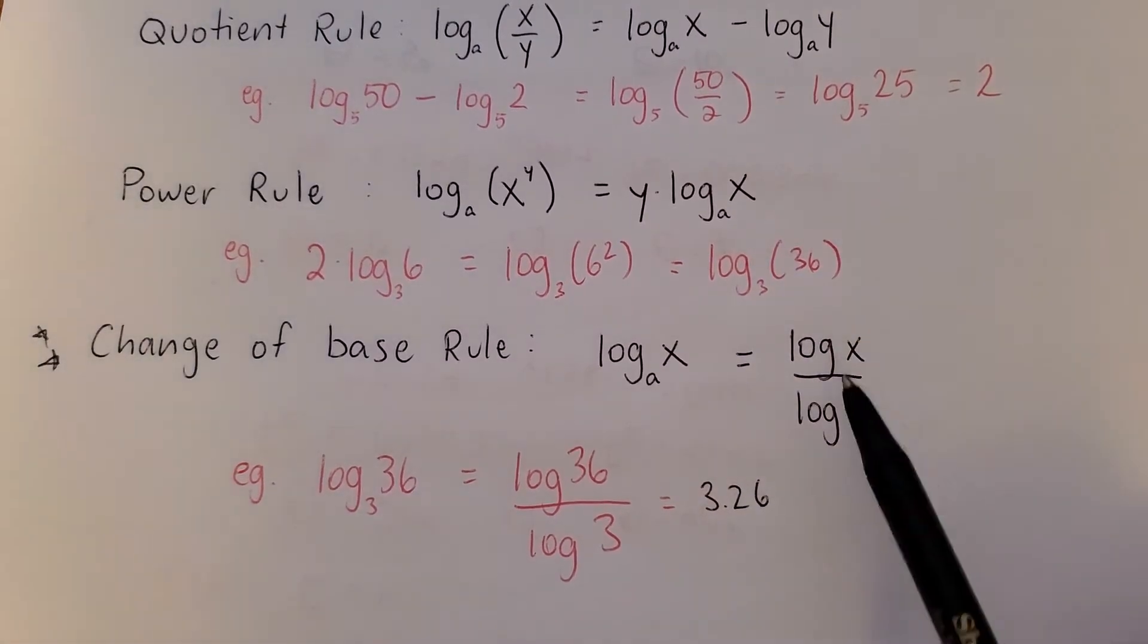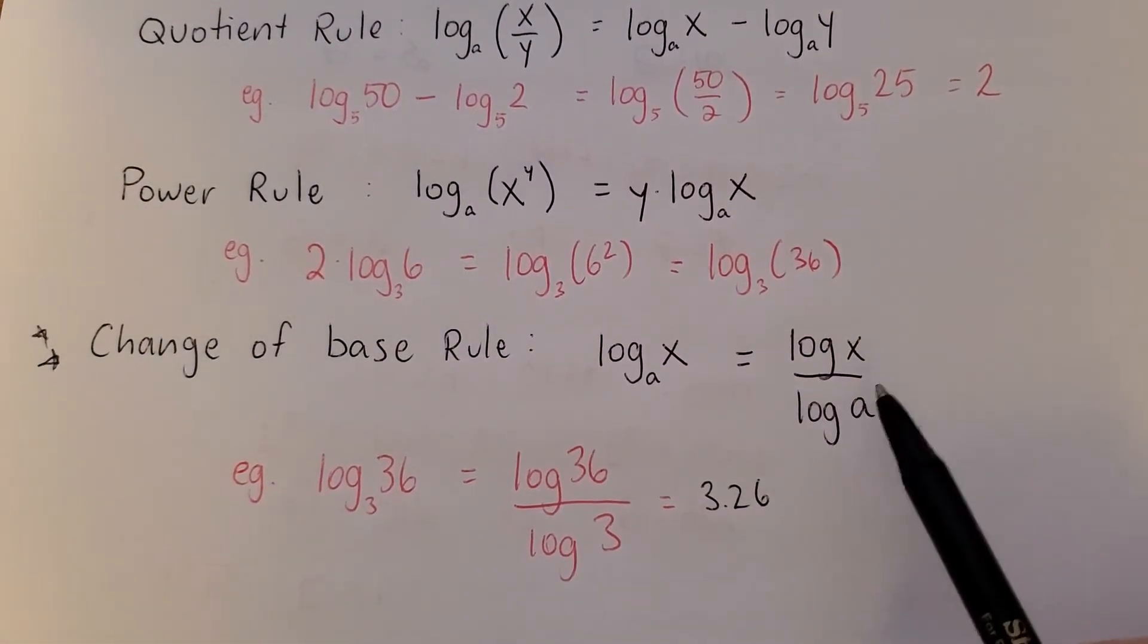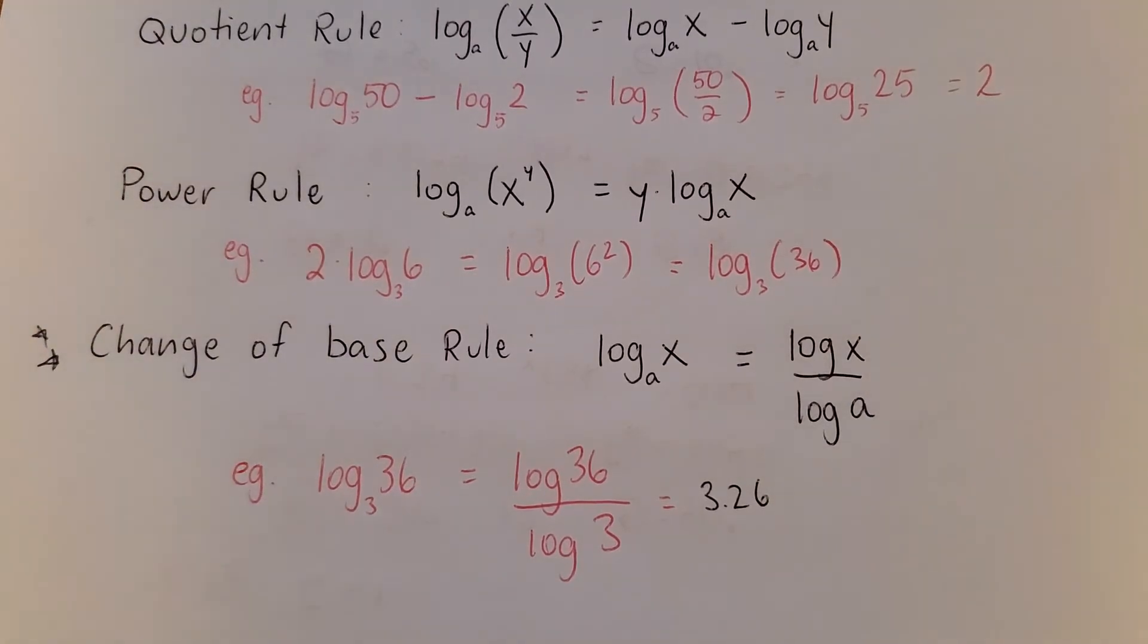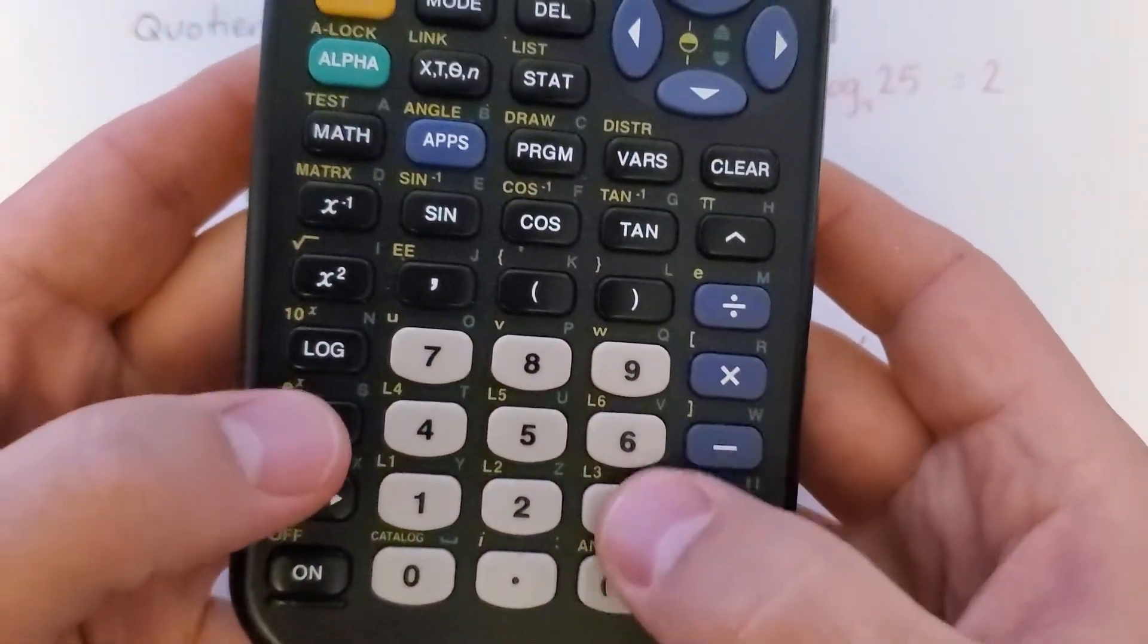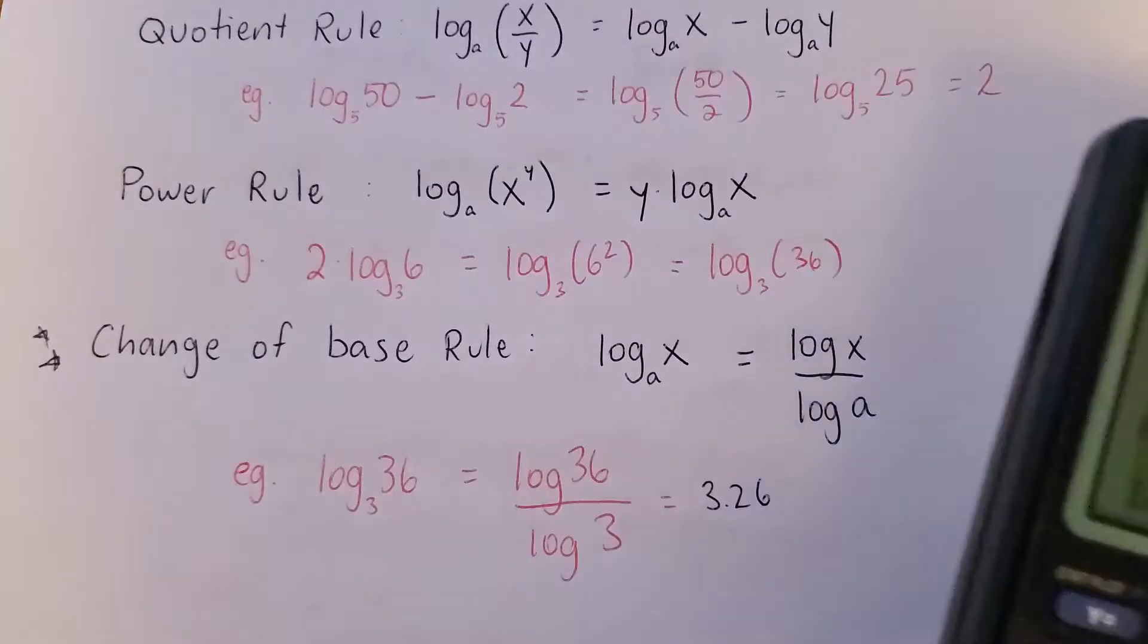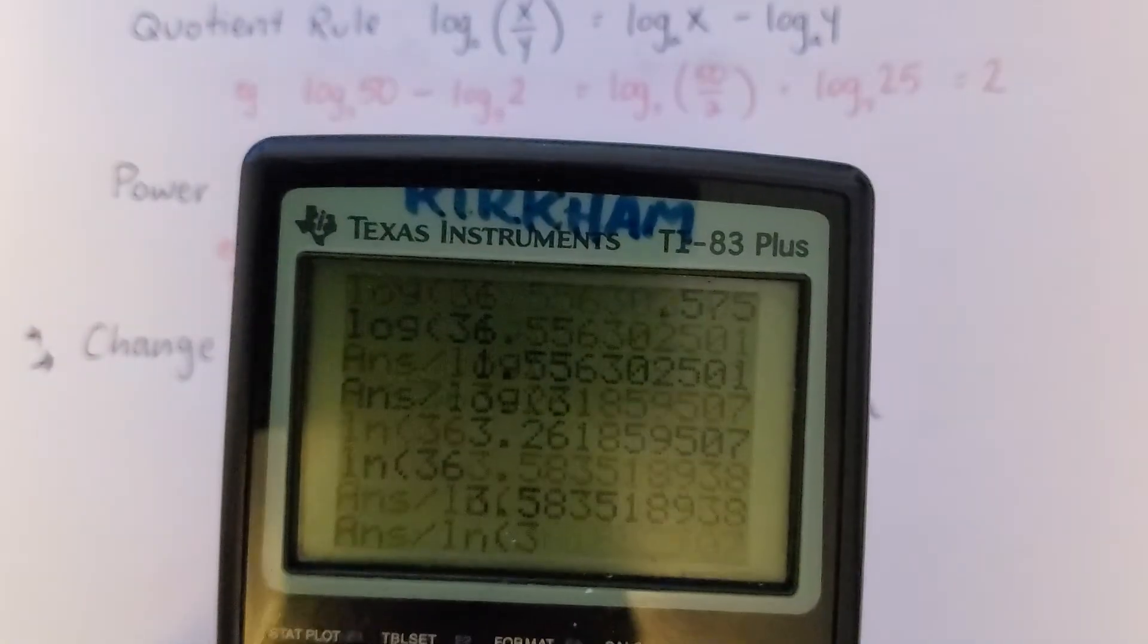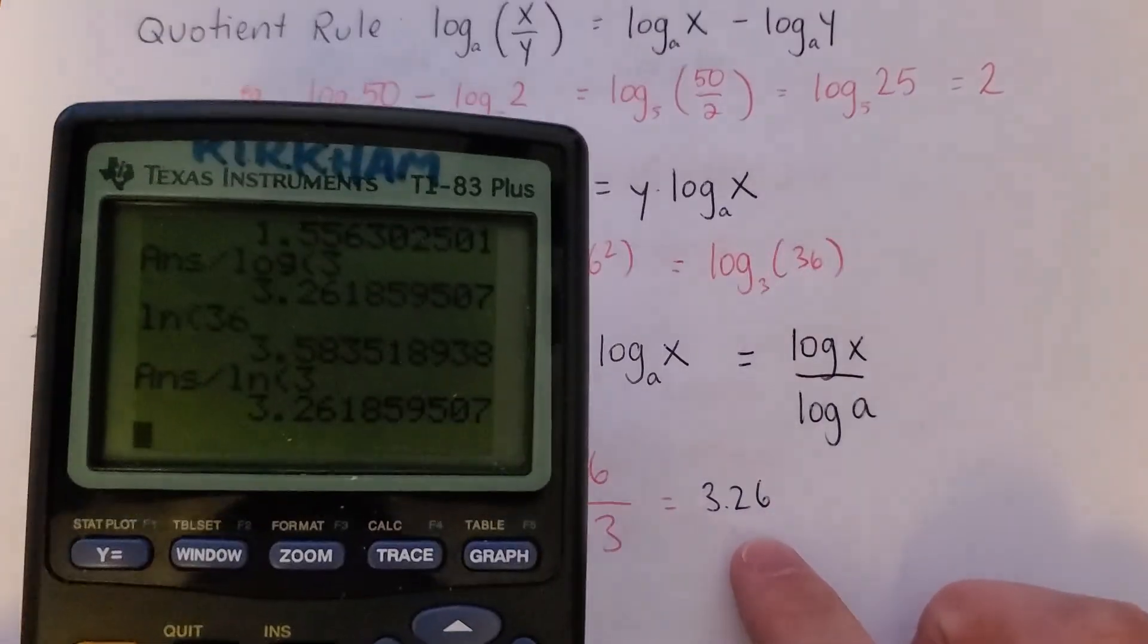Now I'll point out the way I've written it. Log without a base is base 10. But the base can be anything. So you could actually do natural logs if you want. Remember the ln? We don't use them much. But if I do ln 36 divided by ln 3, I get the same answer. It doesn't matter what the base is.